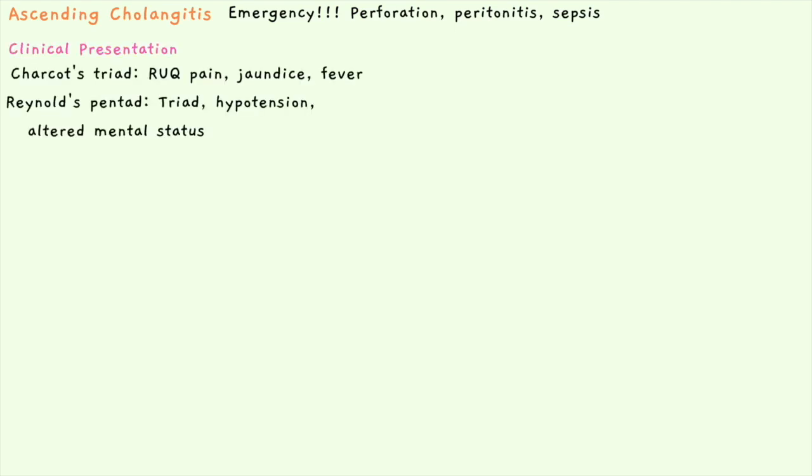The clinical presentation is defined as Charcot's triad, so the patient will present with right upper quadrant pain, jaundice, and fever. Reynolds pentad is a poor sign because it includes the triad plus hypotension and altered mental status, emphasizing that perforation, peritonitis, and sepsis have likely already occurred.